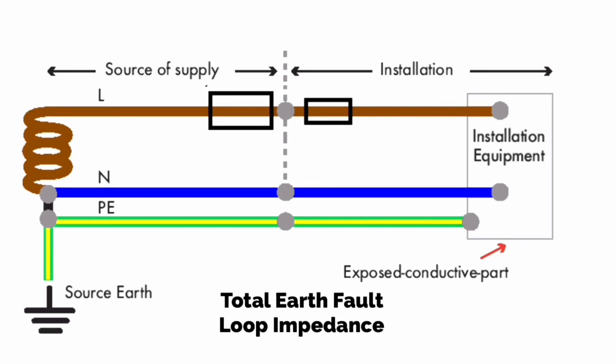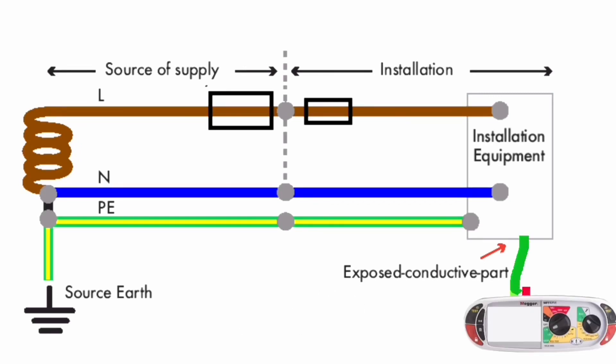Total earth fault loop impedance ZS is measured at the furthest point of a radial circuit and comprises the impedance offered by the line conductor R1, the impedance offered by the circuit protective conductor R2, and the impedance offered by the supply authority's cable.